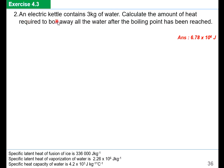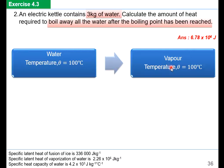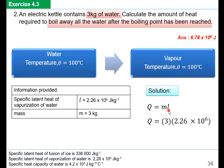Example 2: An electric kettle contains 3 kg of water. Calculate the amount of heat required to boil away all the water after the boiling point has been reached. Water at 100°C is to change to vapor — so this is a phase change. Information given: l = 2.26 × 10⁶ J/kg, m = 3 kg. Using Q = ml: Q = 3 × 2.26 × 10⁶ = 6.78 × 10⁶ joules. Remember: Q = ml when there is a phase change but temperature remains the same.